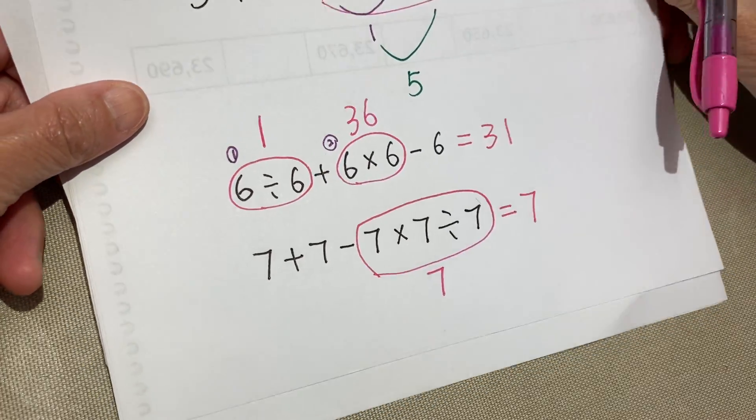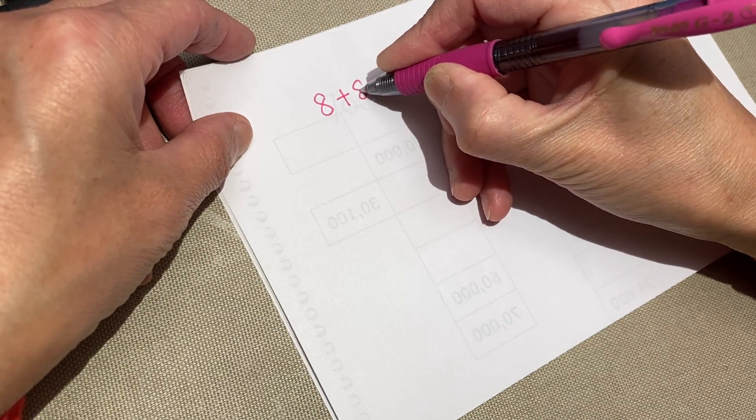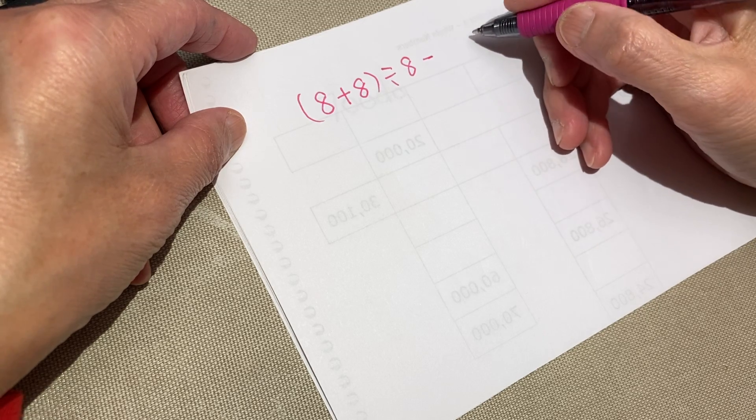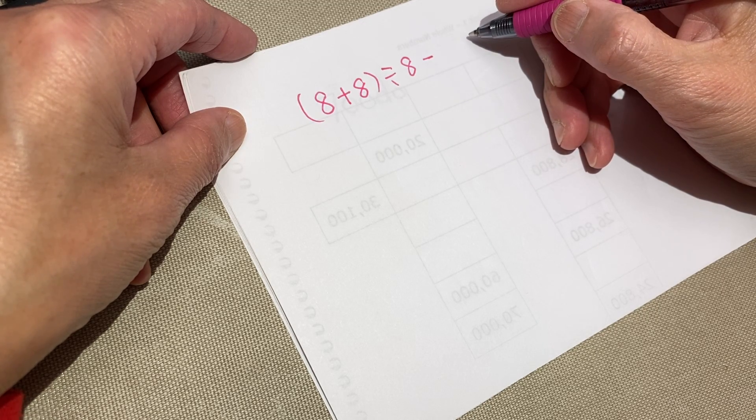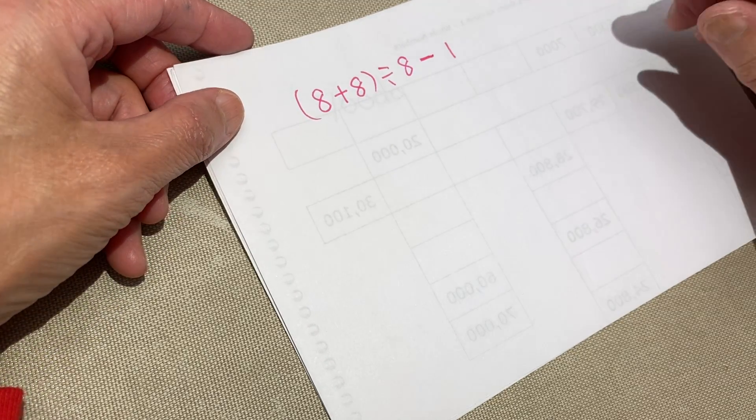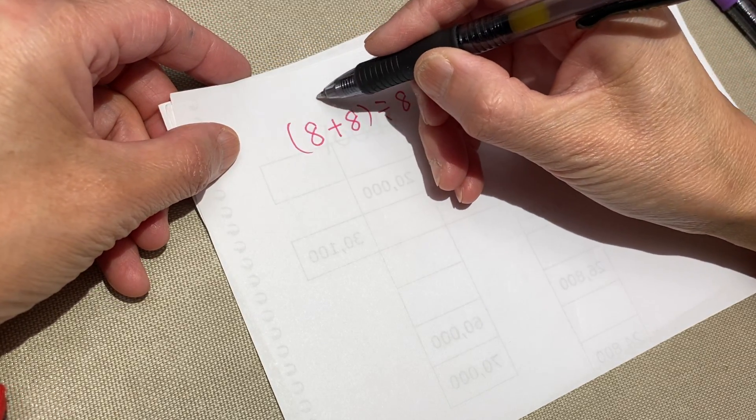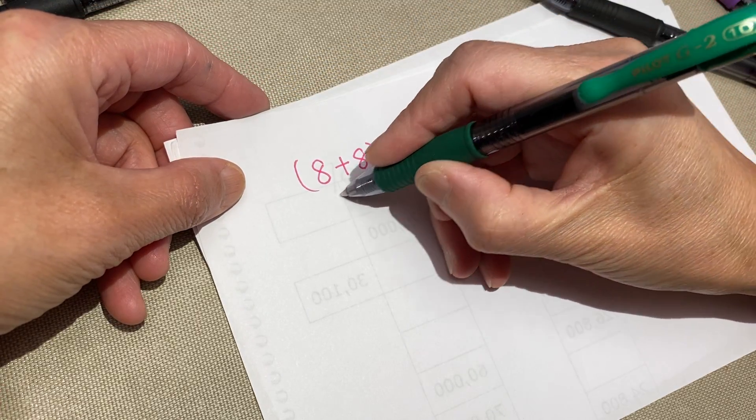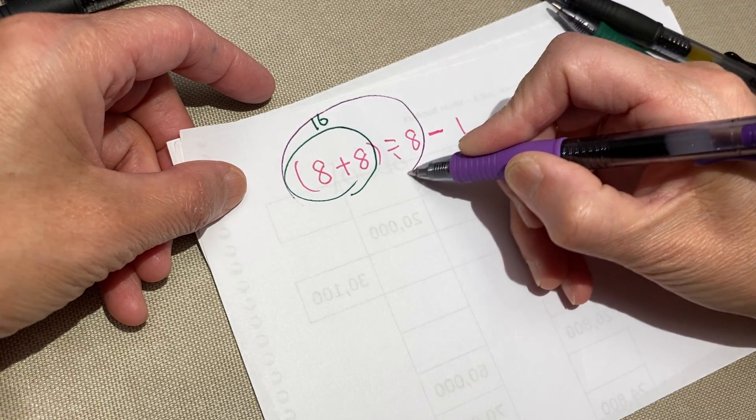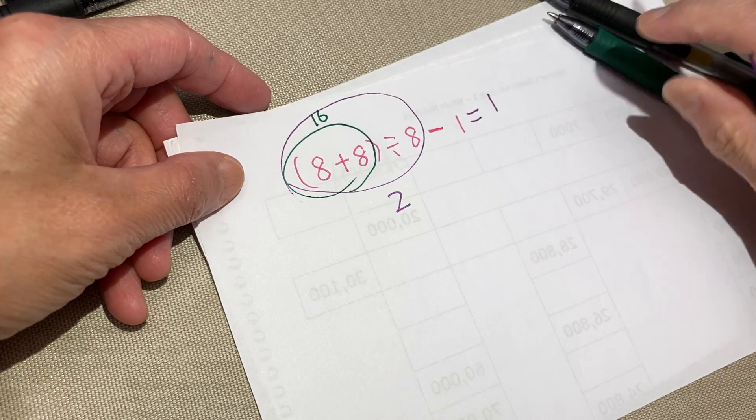Okay. So now we do one with parentheses. Eight plus eight plus eight divided by eight minus one, because I do not want to make any negative number. So let's take a look. When we see the parentheses, this must be first. So this is 16. And then the second step, 16 divided by eight, we get two. Two minus one equal to one.